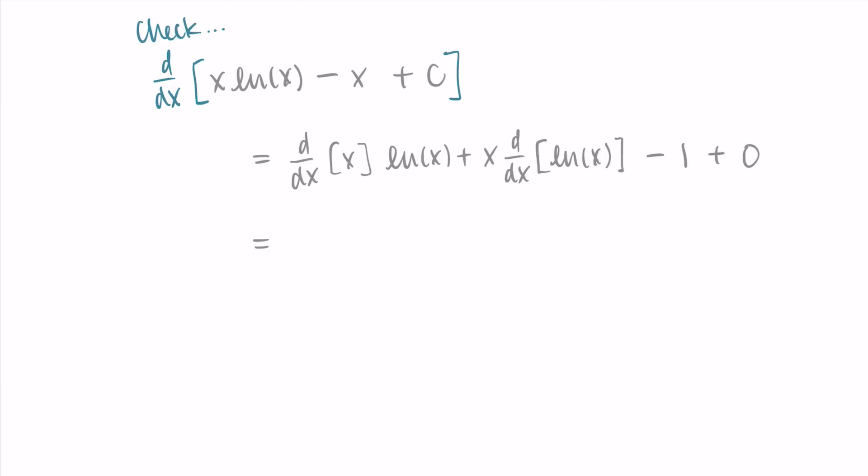From the product rule I'm getting 1 times the natural log of x plus x times 1 over x, and then I have my minus 1 left over from the previous step. Simplifying, I'm getting natural log of x plus 1 minus 1. That plus 1 and minus 1 cancel, leaving me with natural log of x, which is what I was hoping for.